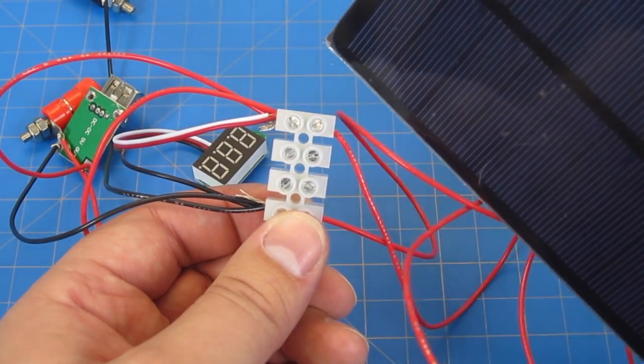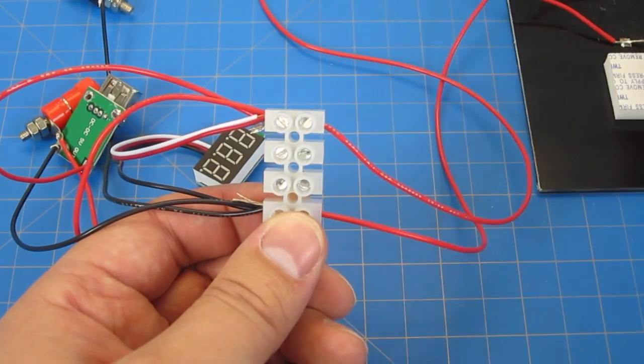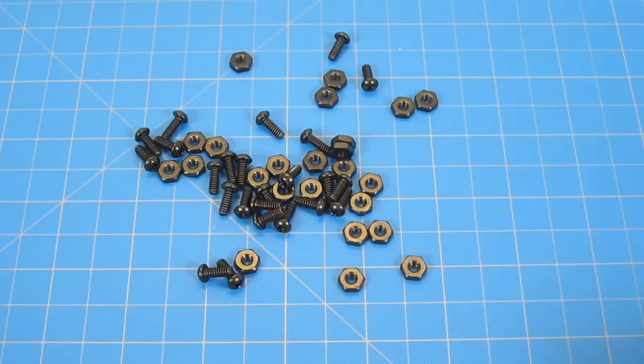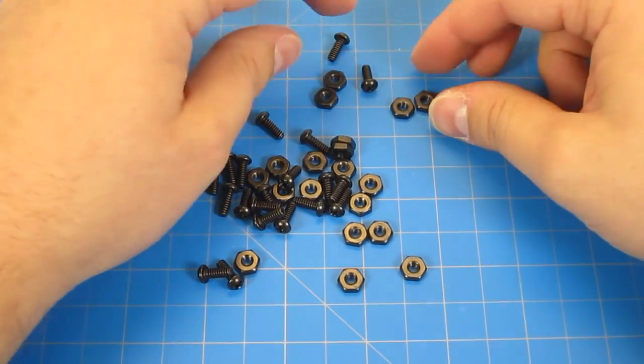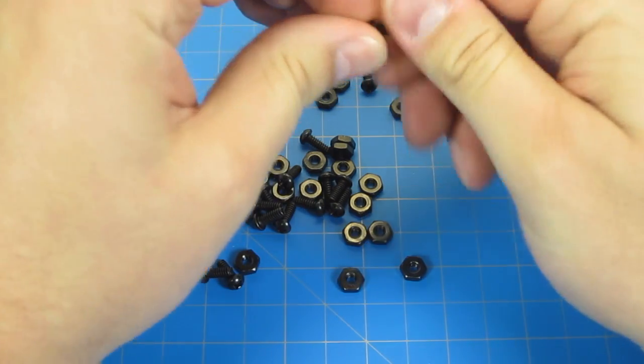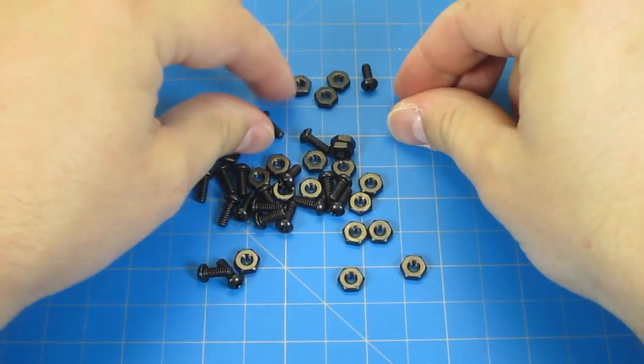On the back of your solar cell, you'll see the positive and negative marked very clearly, even if the wires are the same color. Now look at all the wonderful screws and nuts you have. To make life easier, lightly screw them together and put them to the side. Do this for all of them.